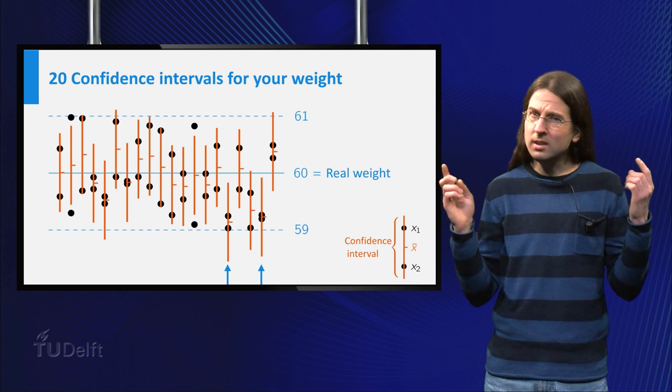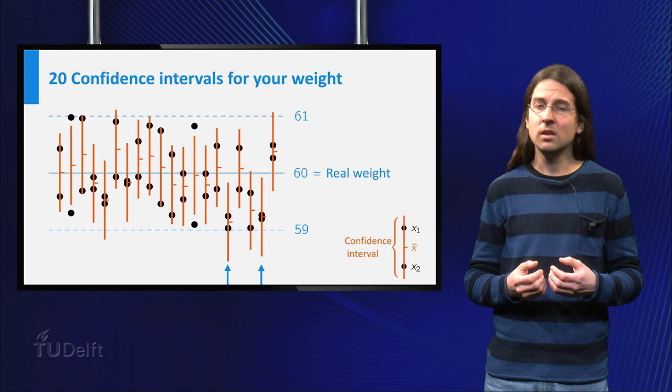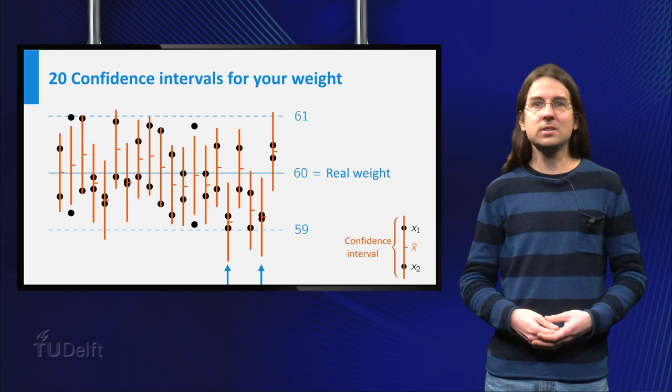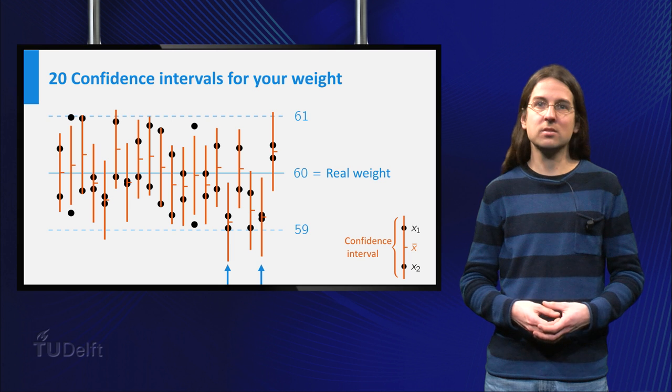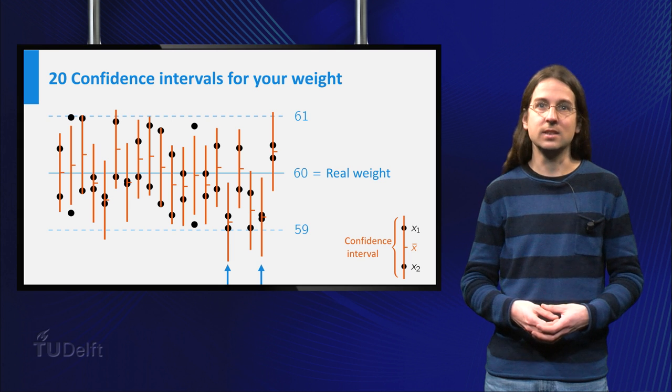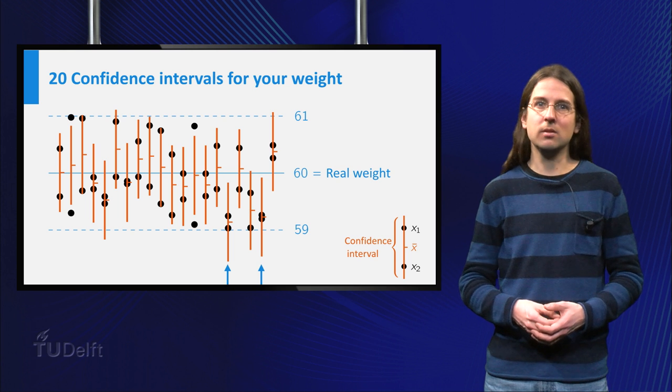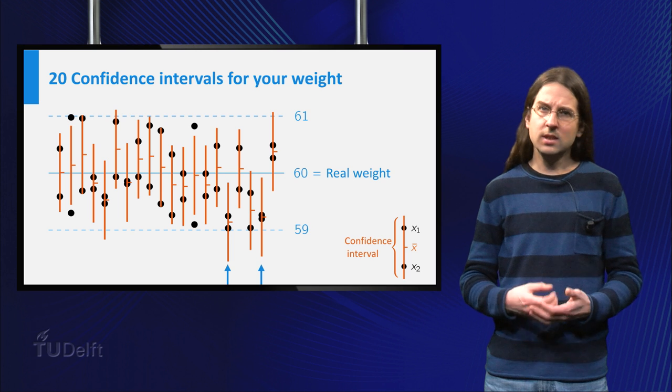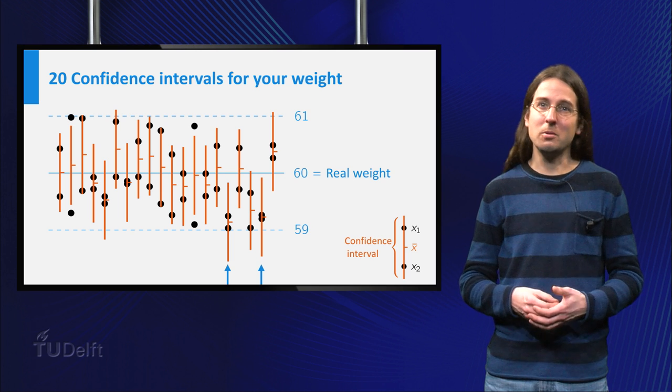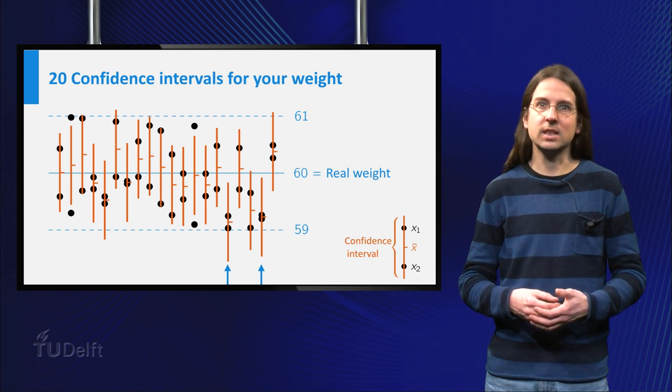Why not exactly 1 out of 20? Well, of course the 95% is the probability that one of these confidence intervals contains 60, so it does not mean that exactly 1 from every 20 confidence intervals does not contain 60. Just as you do not always throw exactly one 6 with 6 dice.